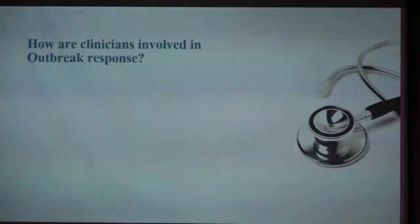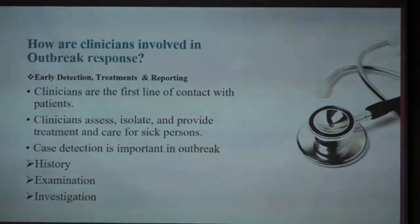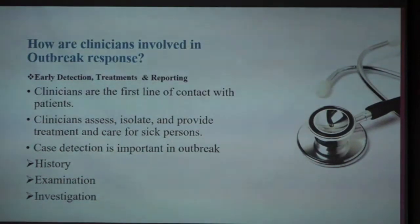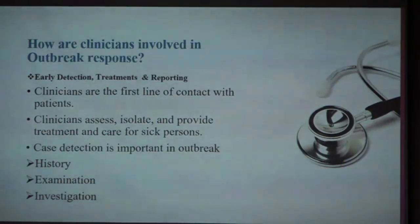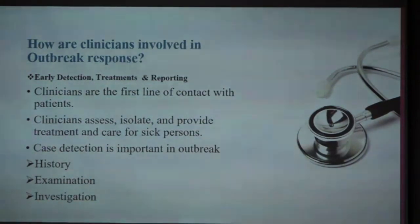During the response phase — phase number two — what can clinicians do? Normally, patients come to you as the first-line contact. You have to do a proper assessment. You have to go back to your medical student period: take a proper history, examination, and investigation. When I say history, all components of history are important — social history, family history, contact history, travel history — all those things are very important in an outbreak.